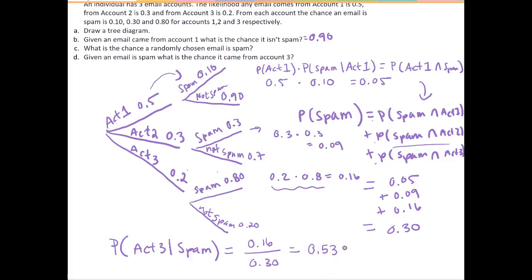To summarize: the chance a randomly chosen email is spam is 0.30, and the likelihood a spam email came from account 3 is 0.53. And that's how we solve this problem.